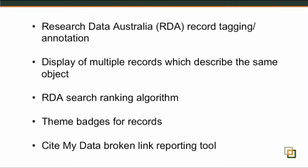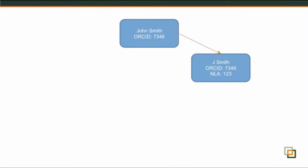The first thing I'll go into is the identifiers linking that we've put in place in Research Australia. This is really a way of asserting that records are the same if they're described using the same identifier, or identifiers that can be tracked through a series of records related to the same entity.